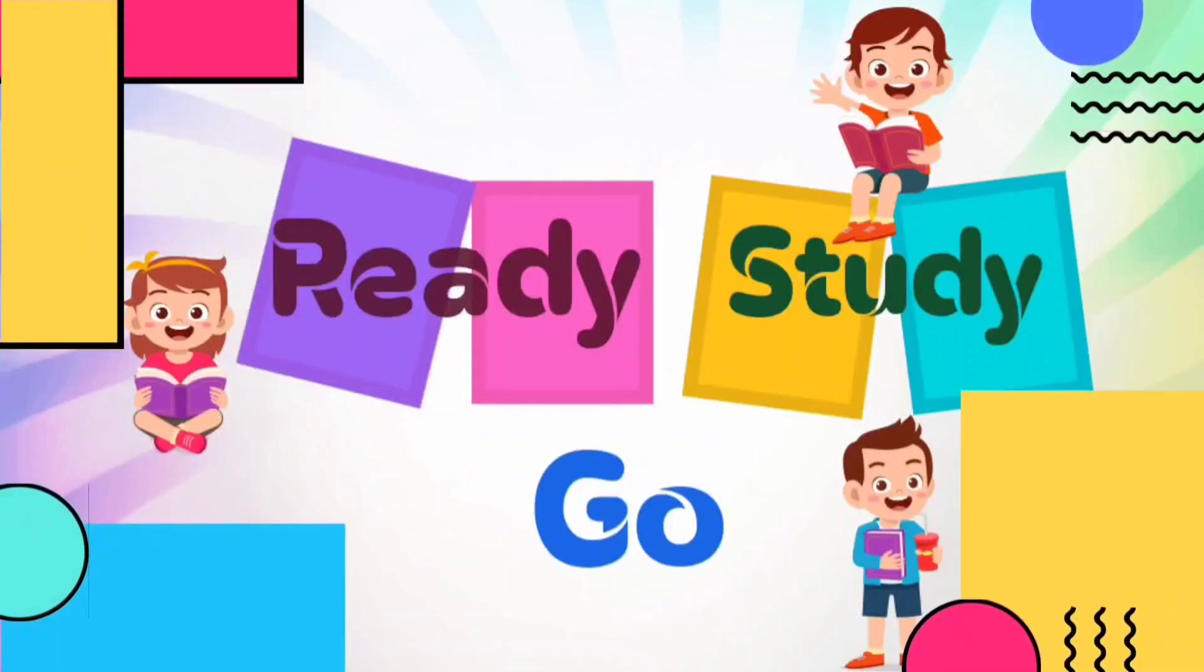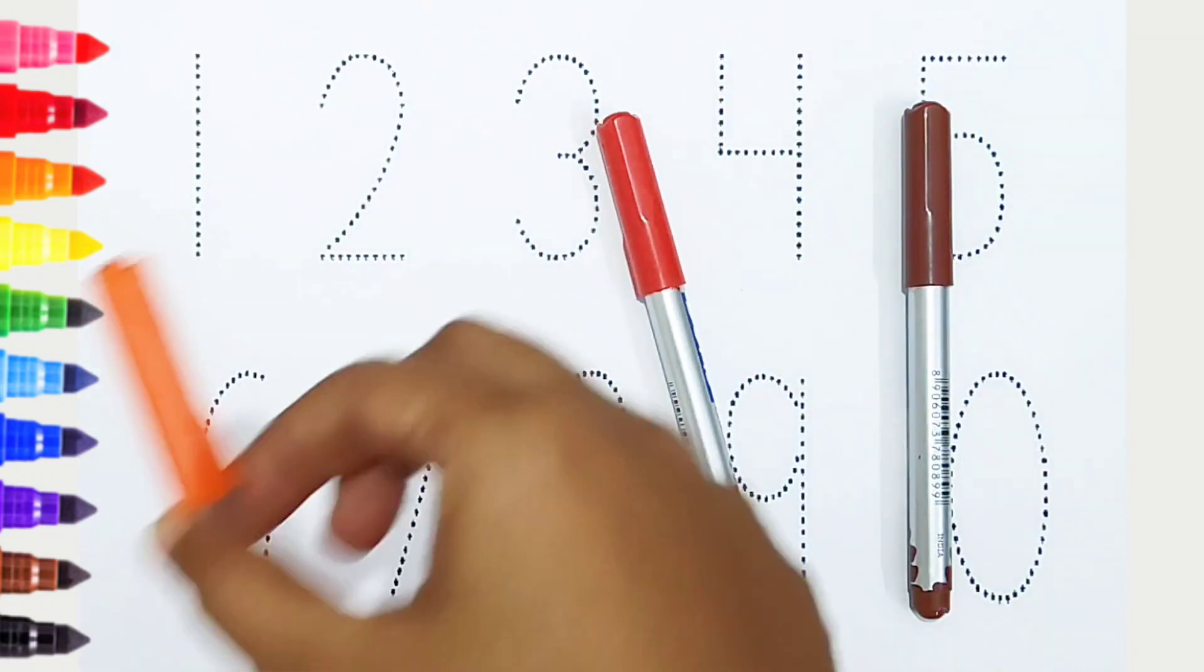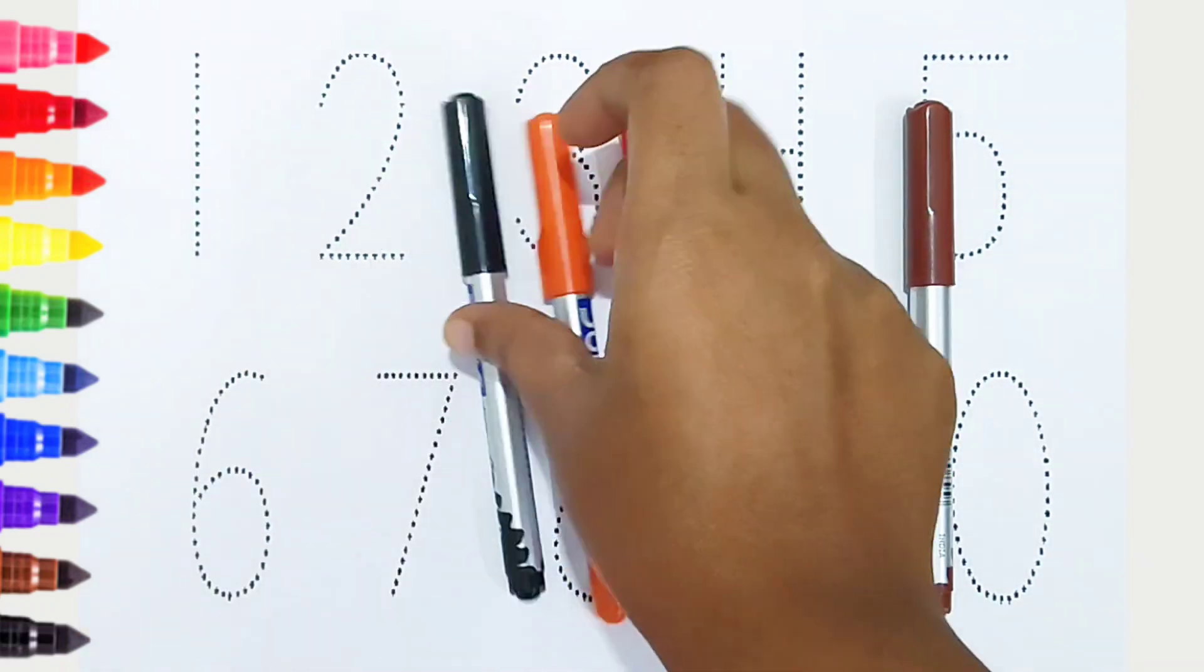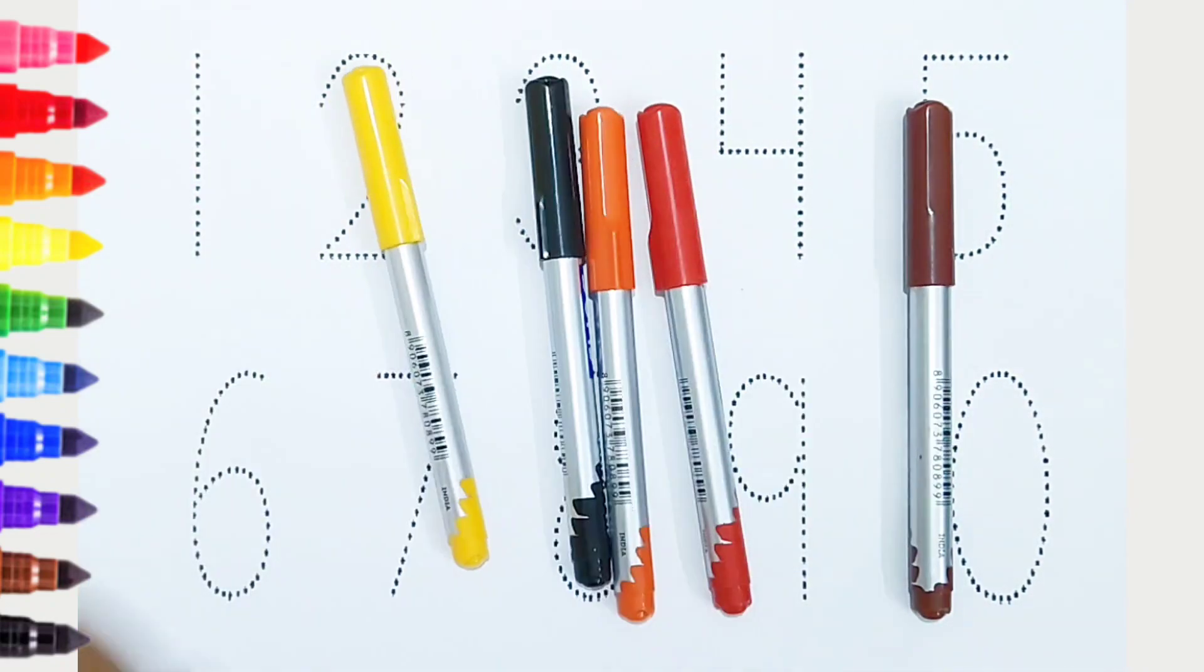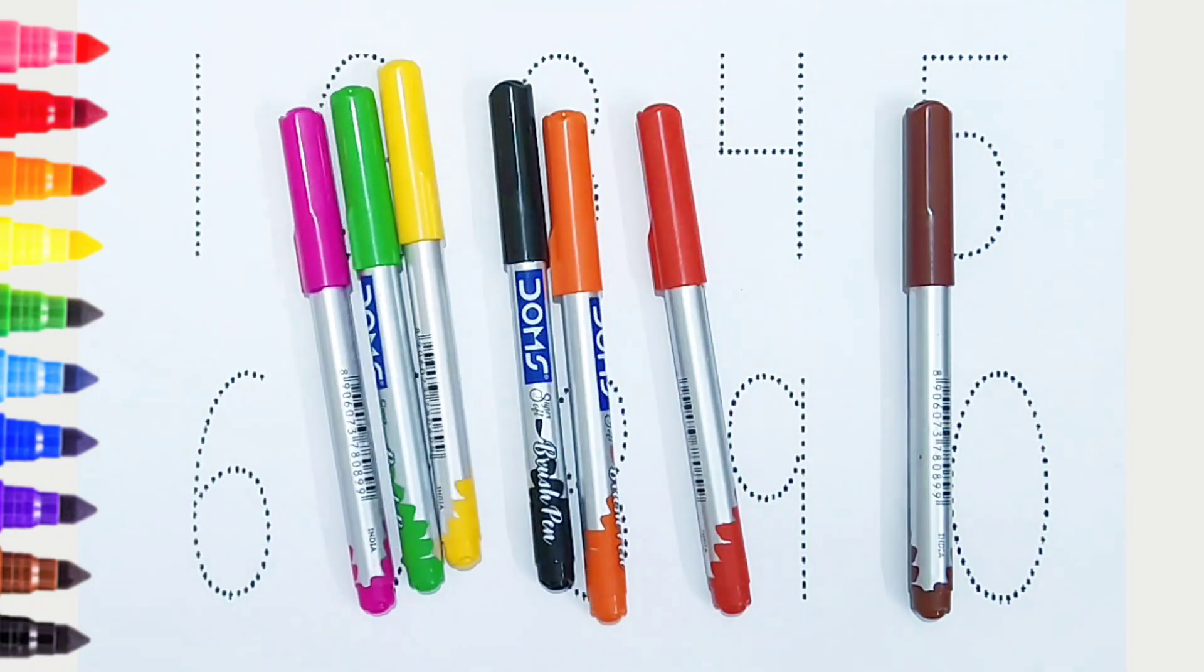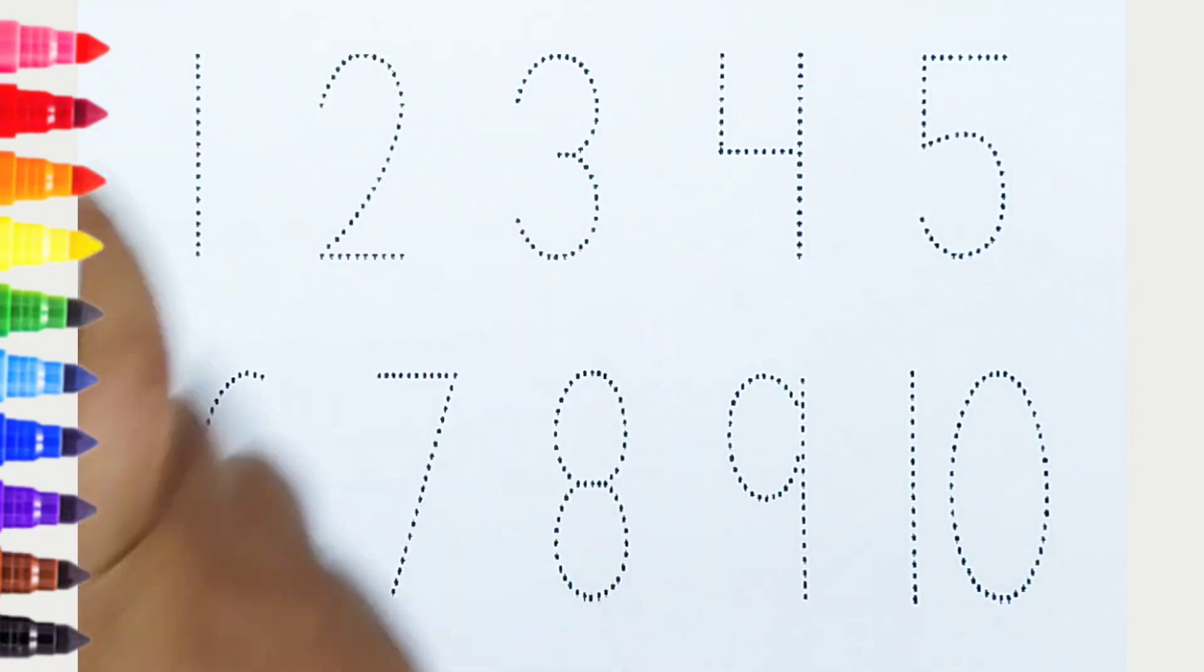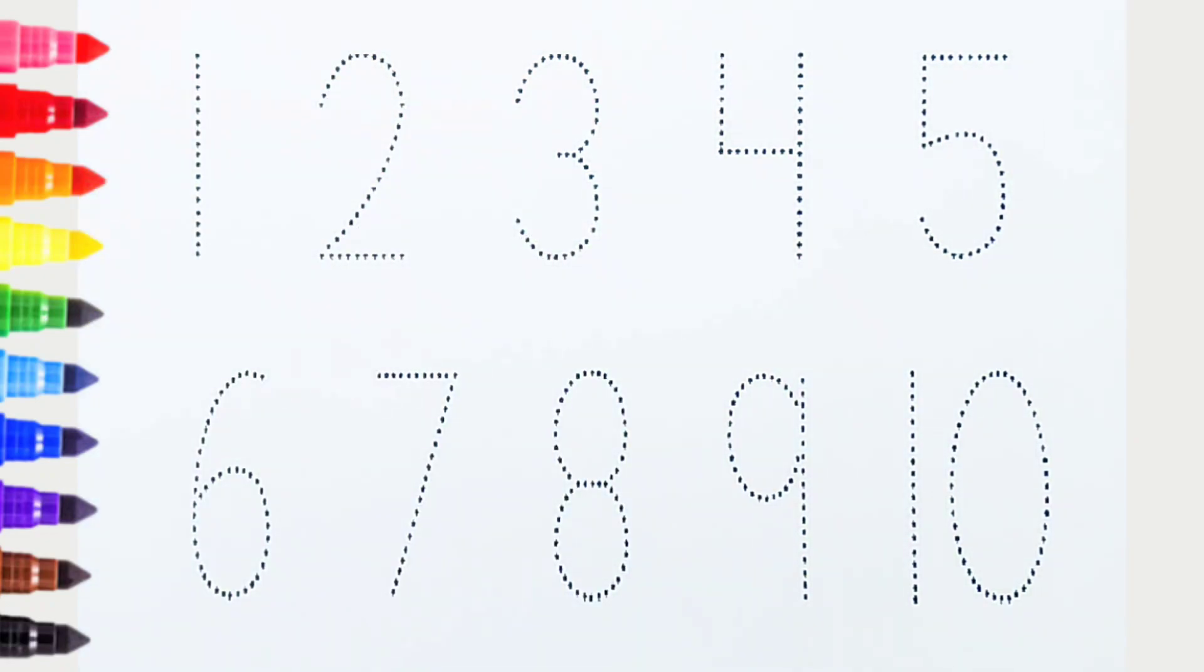Ready, study, go! Brown color, red color, orange color, black color, yellow color, green color, pink color, blue color. Hi kids, today we can learn the numbers from 1 to 10. Let's begin.